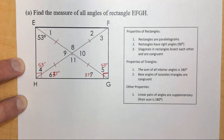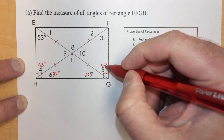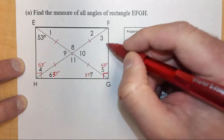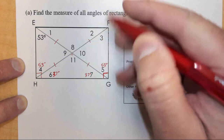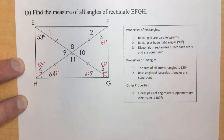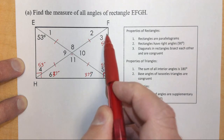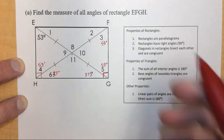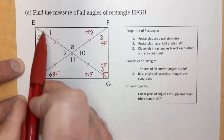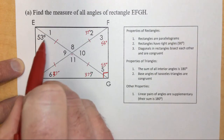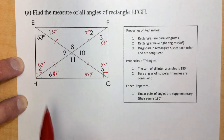Since angles 6 and 7 add up to 90 degrees, angle 5 must be 53 degrees — the difference of 90 and 37. Going around, since angle 5 is 53 degrees and both are base angles of the next isosceles triangle, angle 3 must also be 53 degrees. Angle 2, being the complement within the 90-degree corner angle F-E-G, is 37 degrees. Angle 1 is also the difference of 90 and 53, which is 37 degrees.